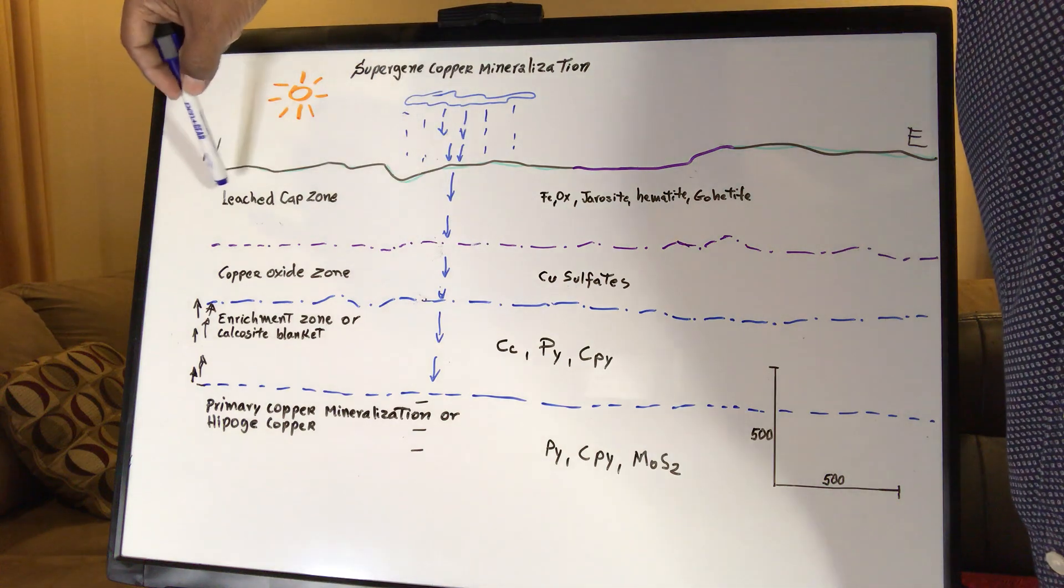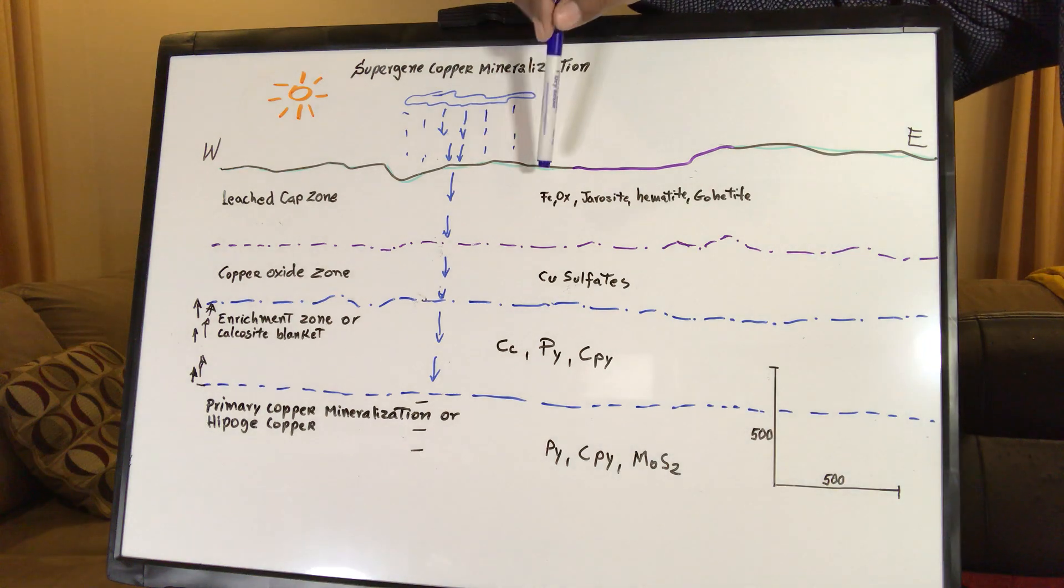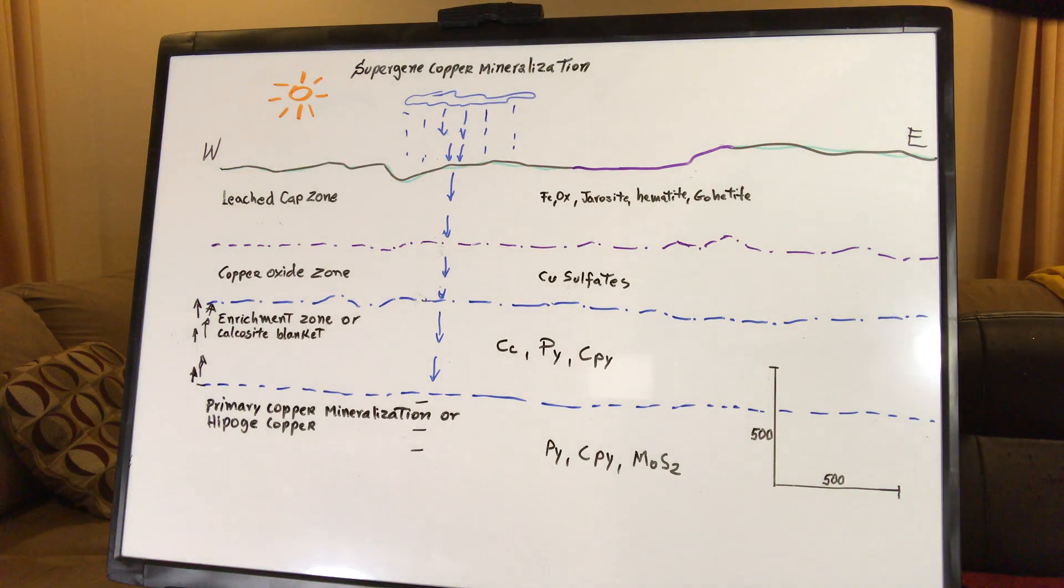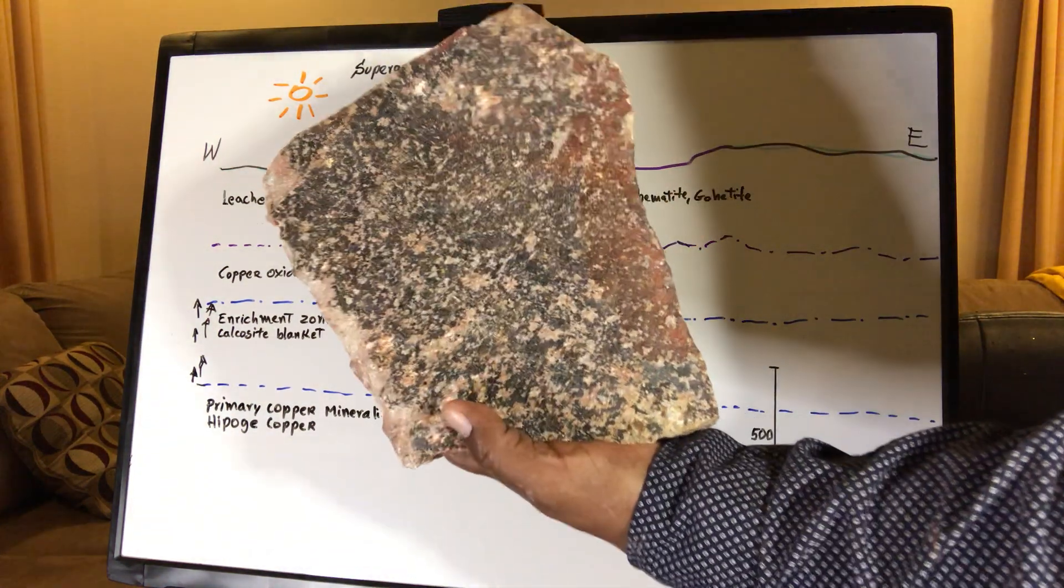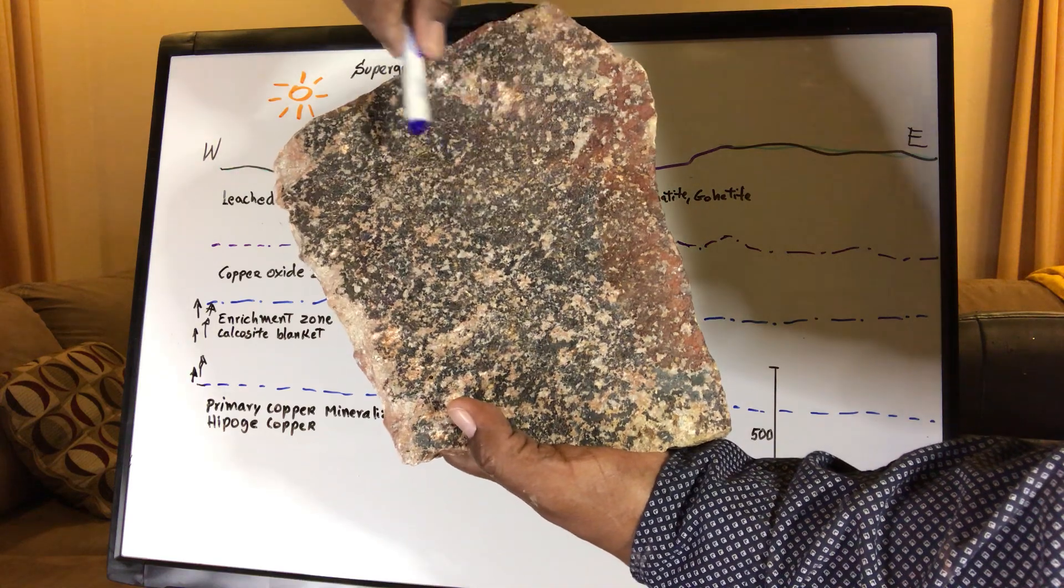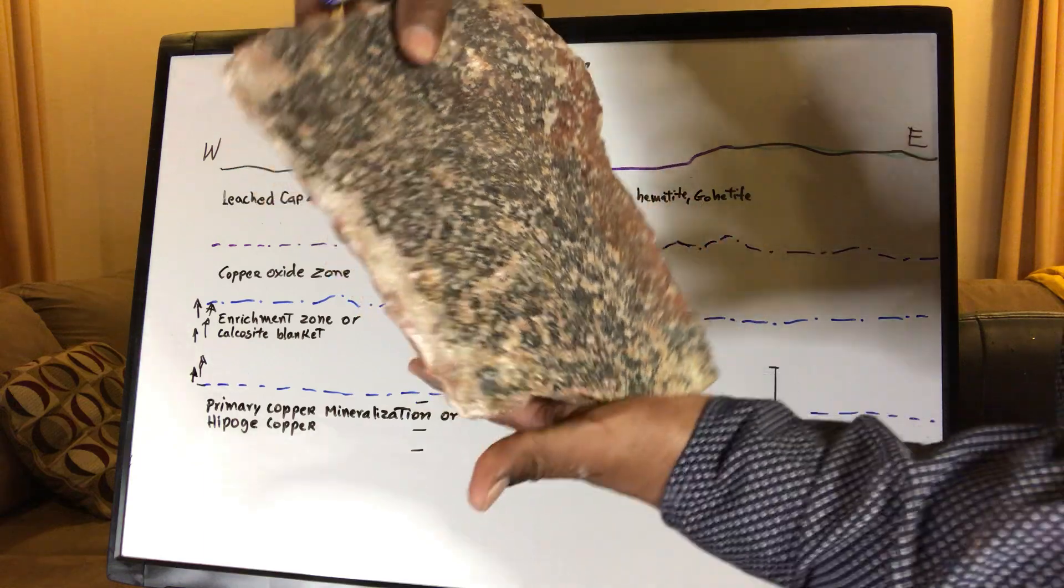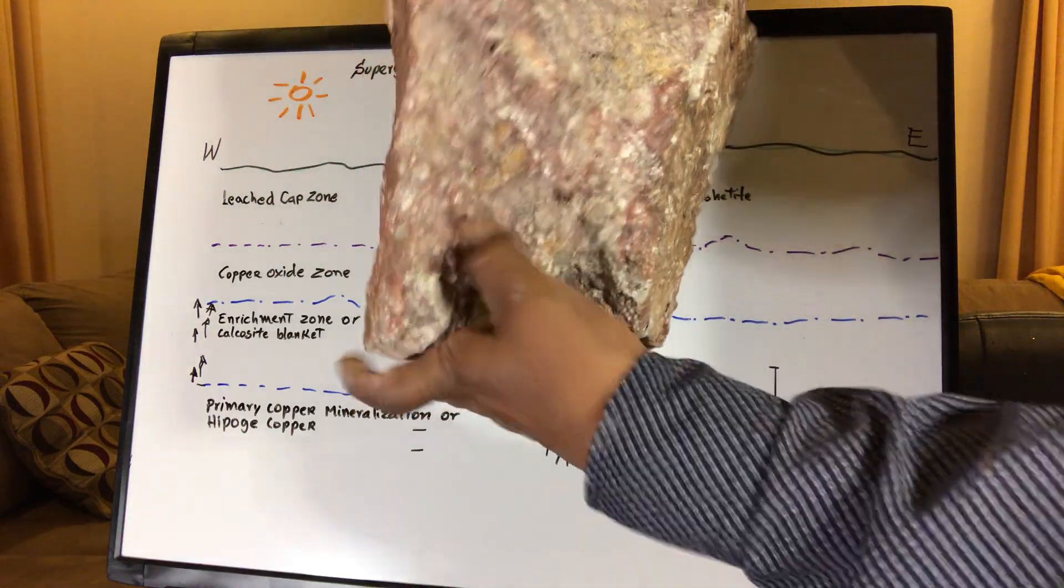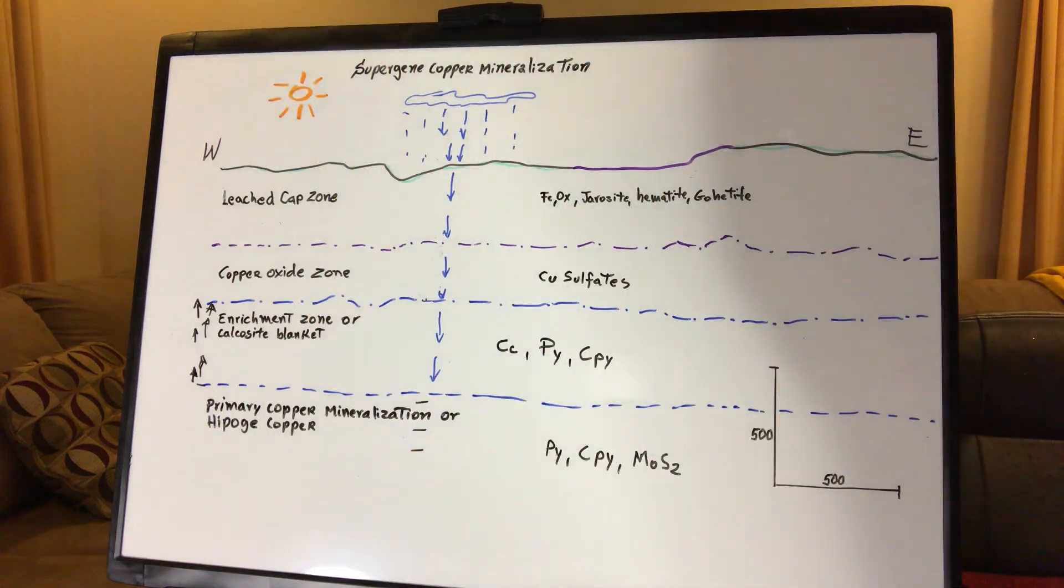And we're going to have something we call leached cap zone. And this one, we're going to have iron oxide, jarosite, hematite, and goethite. And we're going to see rocks like this. So this is a fracture. One point in time, there was sulfides in here. Not anymore. Everything is hematite, iron oxide. We see the other side. There's no sulfides. Everything is iron oxide. And that's the leached cap zone.